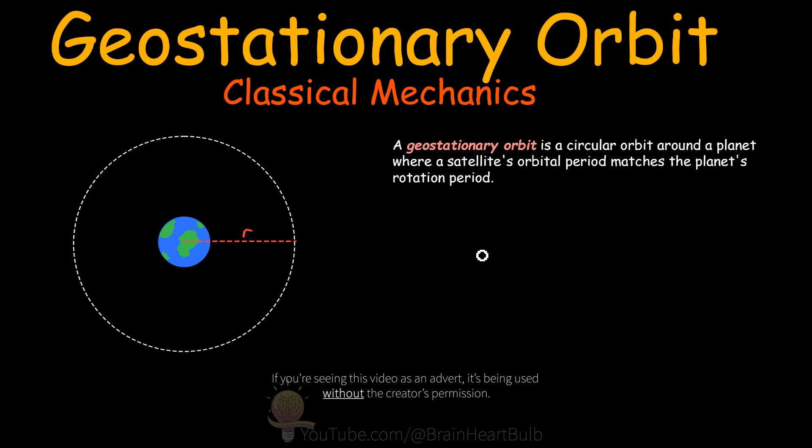In this video, we're going to derive a formula that will allow us to calculate the geostationary orbit. Now, a geostationary orbit is a circular orbit around any planet where a satellite's orbital period matches the planet's rotational period.